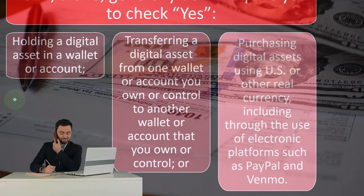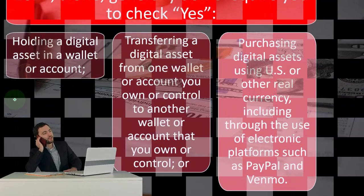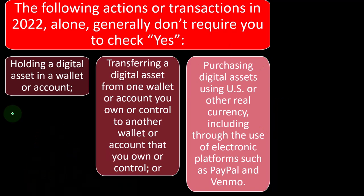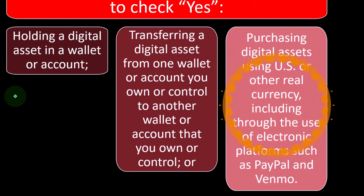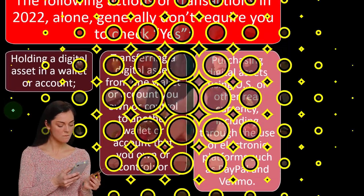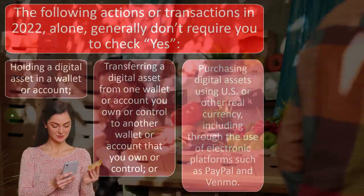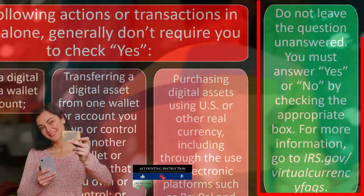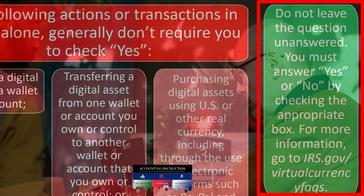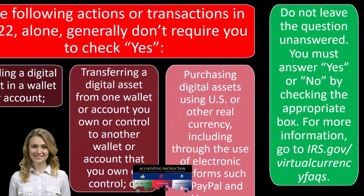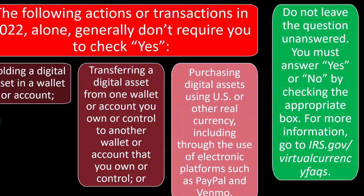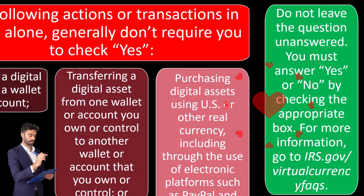Purchasing a digital asset using US or other real currency, including through the use of an electronic platform such as PayPal and Venmo, also generally doesn't require checking Yes. At the point of purchase there's typically no tax triggering event; it's usually when you sell the digital assets that you might realize a gain — sales price minus cost. Do not leave the question unanswered. You must answer Yes or No by checking the appropriate box. For more information, you can go to irs.gov/virtualcurrencies.